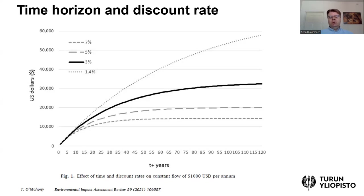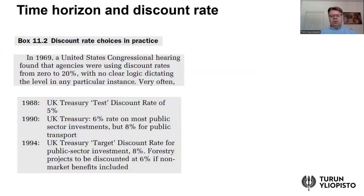Because the choice of discount rate can make a huge difference to the net present value, and hence whether a project is implemented or not, policy makers need guidelines on what discount rate to use — and the discount rate shouldn't just change from one project to another. In the past there was little standardization; a 1969 US congressional hearing found that public agencies were using discount rates varying from zero to twenty percent with no clear logic.